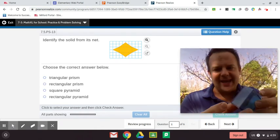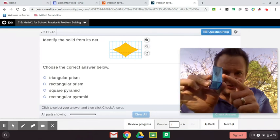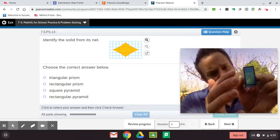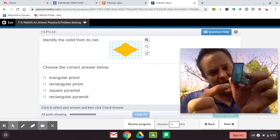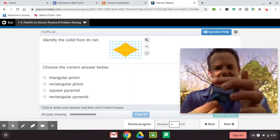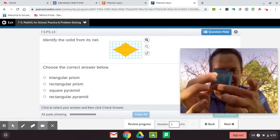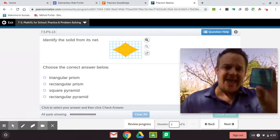And let's now count the edges. These are the edges going right here. That's one, two, three, four. And on the backside, five, six, seven, eight. And now the lateral, nine, 10, 11, 12. So it's got 12 edges.